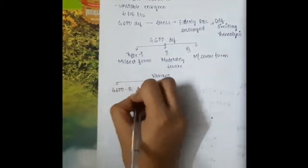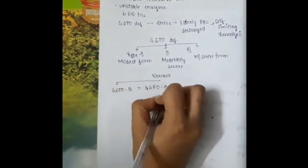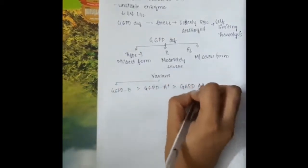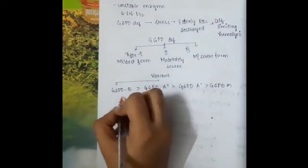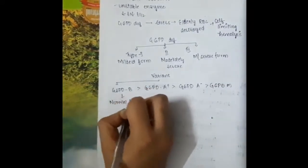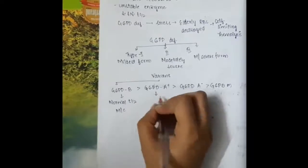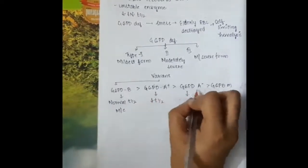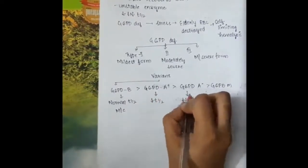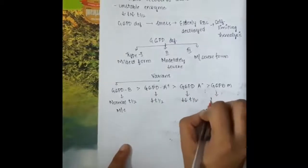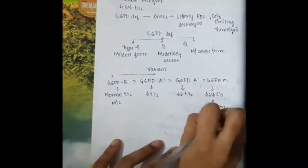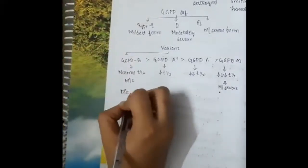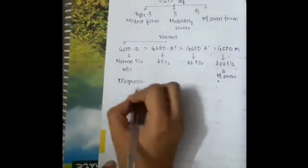If we see the variants, we have four variants of G6PD deficiency: B type, A plus type, A minus type, and M type. B type has normal half-life and is most common, whereas A plus, A minus, and M have decreased half-life with severity increasing from A plus, A minus, to M. M is the most severe form of G6PD deficiency.